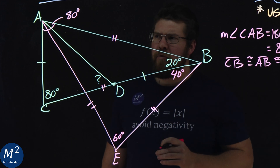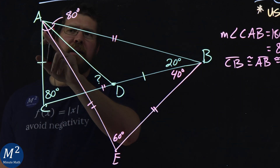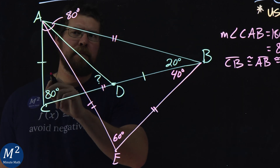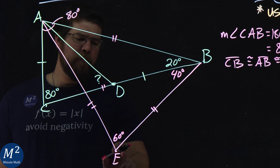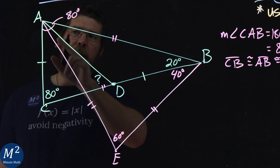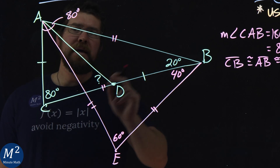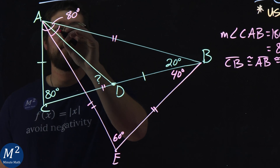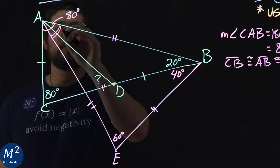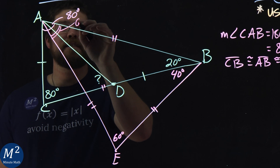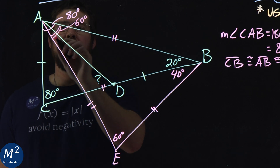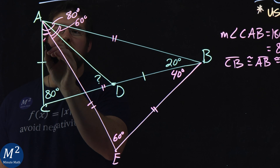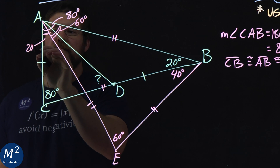Now, 80 degrees fills the whole angle at A. Since angle EAB is 60 degrees, the remaining portion — angle CAE — has to be 20 degrees.